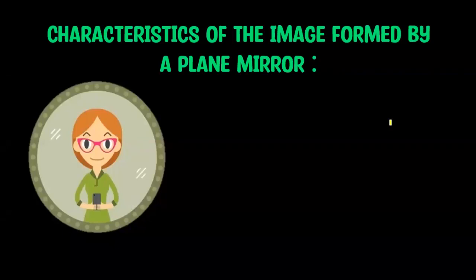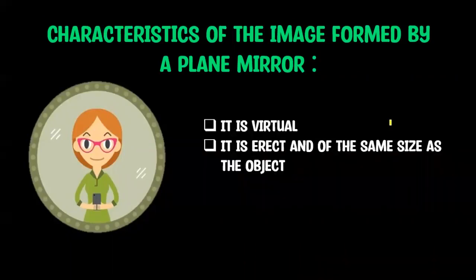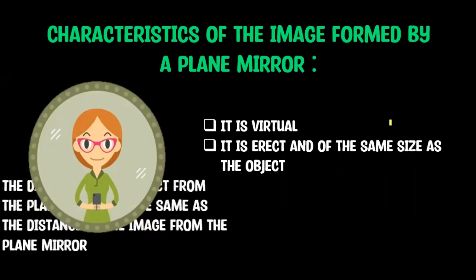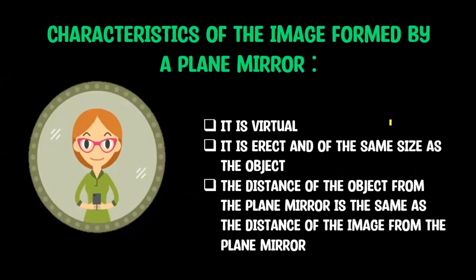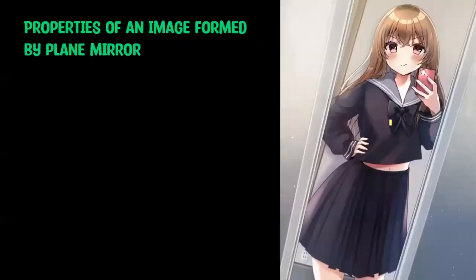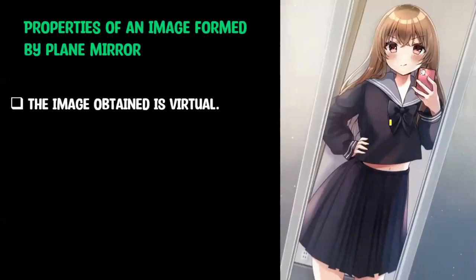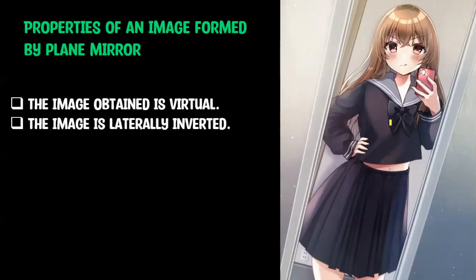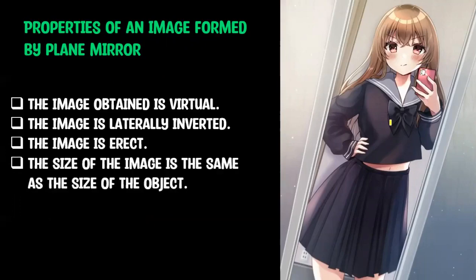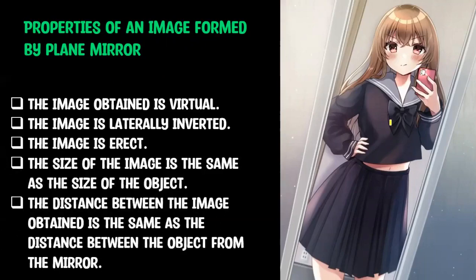These are the characteristics and properties of the image formed by a plane mirror. The image is virtual. It is erect and of the same size as the object. The distance of the object from the plane mirror is the same as the distance of the image from the plane mirror. The image is laterally inverted. The size of the image is the same as the size of the object, and the distance between the image and mirror equals the distance between the object and the mirror.